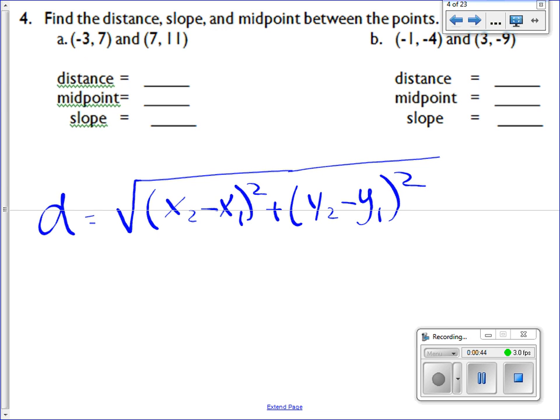So you go to your ordered pairs. You label one of the values x sub 1, the other one y sub 1, and then x sub 2, y sub 2. I'm saying y sub because there's subscripts. Okay, so then plug the numbers in. So x sub 2 is 7, so you're gonna have 7 minus negative 3. Be careful with the double negatives.